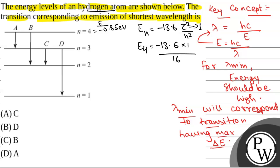For n equals 3, E₃ equals -13.6 × Z²/n². Z² is again 1, divided by n² which is 9. For n equals 2, E₂ equals -13.6 × 1 divided by n², that is 2², which is 4.